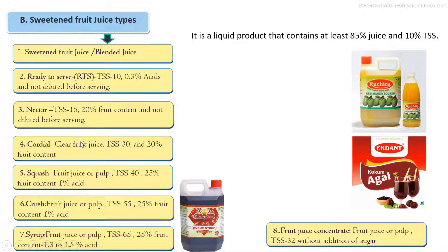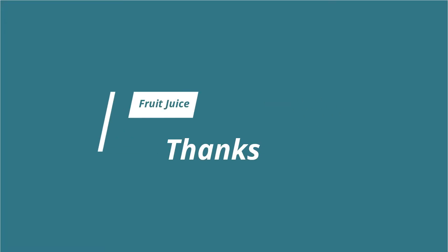In the next lecture, we will discuss how to extract fruit juice from the fruit, what equipment is required, what the preservation technology is, and how to process RTS beverages. In the 3rd through 6th videos, we discuss each sweetened fruit juice type including nectar, cordial, squash, crush, syrup, and fruit juice concentrate. Thank you very much. These are the references used for the preparation of this presentation.